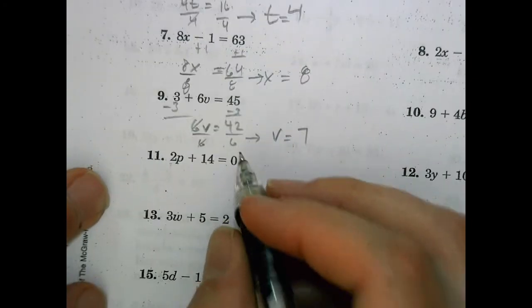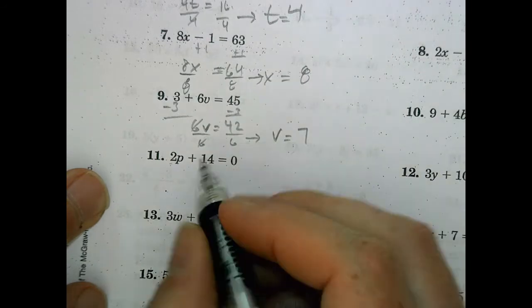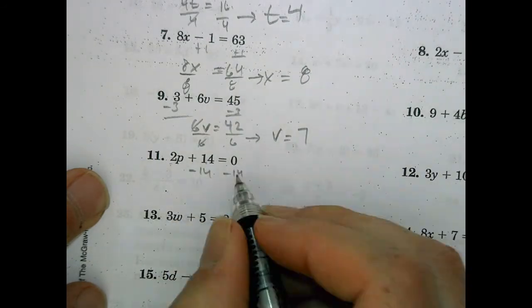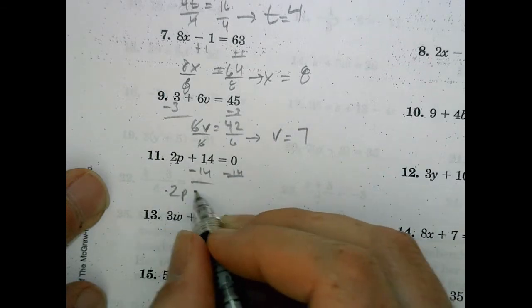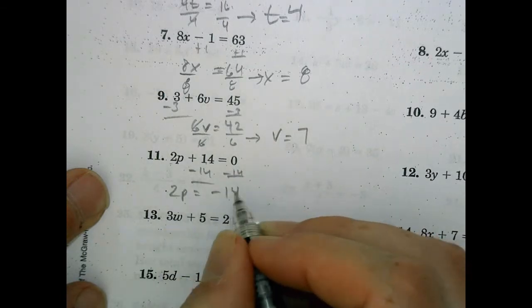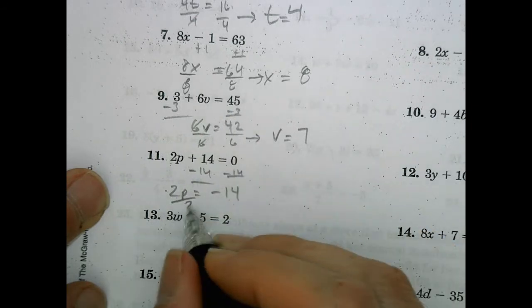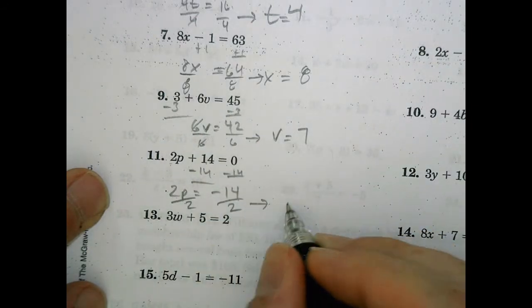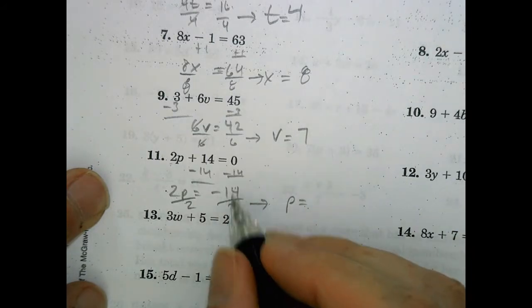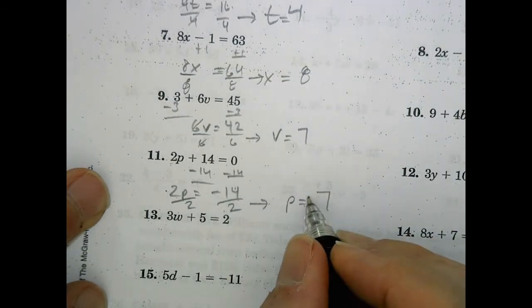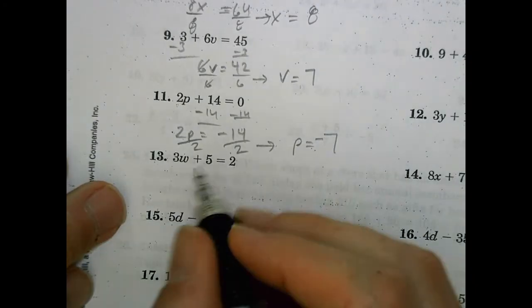This is a funny one just because it has a zero. You might think it's good. No, we still need to get the p by itself. So we're going to subtract 14 from both sides so that 2p equals negative 14. Look at how that worked out. Be careful. Make sure you have the negative sign. Divide by 2, divide by 2. So p equals 14 divided by 2 is 7, but negative divided by positive is negative.